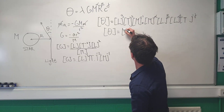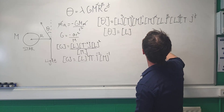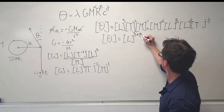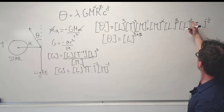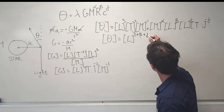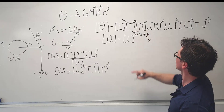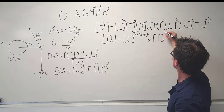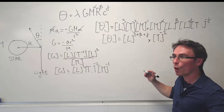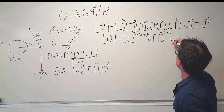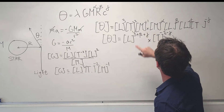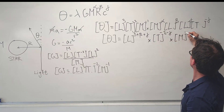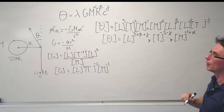Collecting the L terms: L³ from G, L^β from R, and L^γ from c, giving L^(3 + β + γ). For time: T⁻² from G and T^(−γ) from c, giving T^(−2 − γ). For mass: M^(−1) from G and M^α, giving M^(−1 + α).